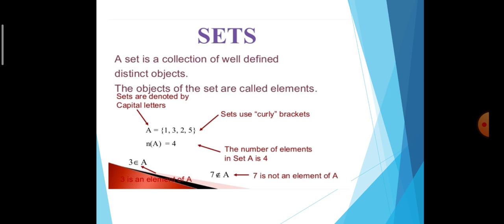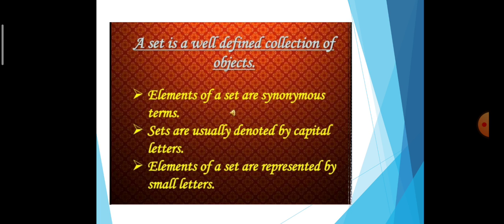See the picture — sets are denoted by capital letters. Objects 1, 3, 2 are called elements. The set symbol is curly brackets. How many elements are there in the set? 4. So, the number of elements in a set is 4. Here, 3 belongs to A. Suppose I ask: does 7 belong to A? No. Therefore, 7 does not belong to A — 7 is not an element of A. A set is a well-defined collection of objects. Elements of a set are also called members. Sets are usually denoted by capital letters, and elements of sets are represented by small letters.